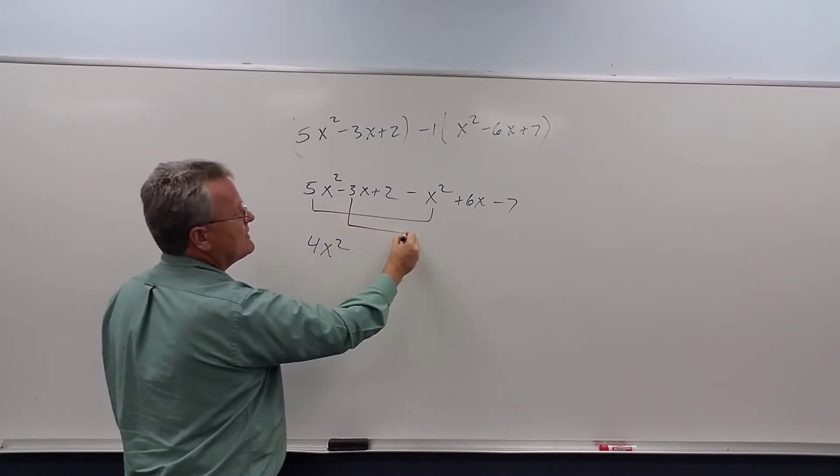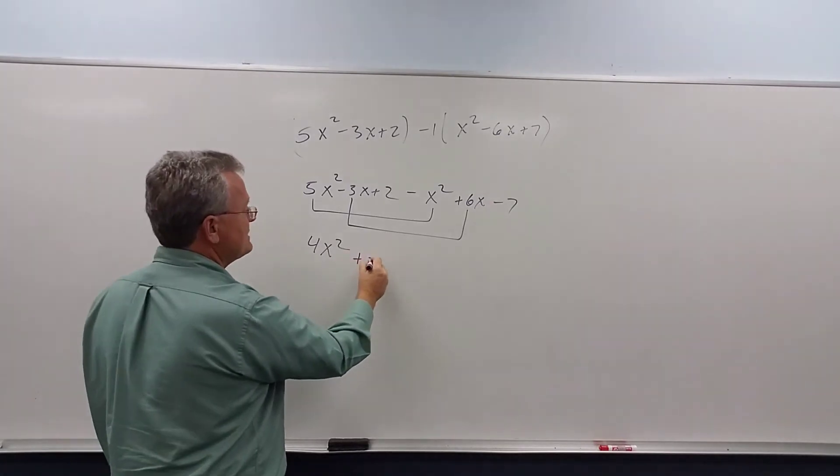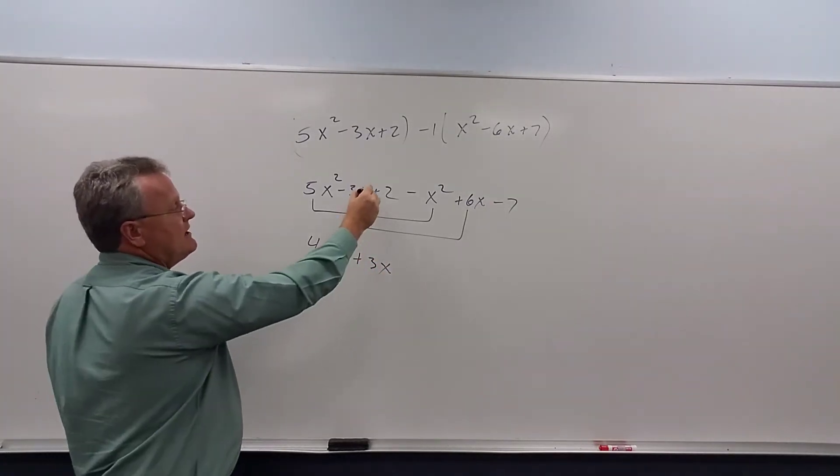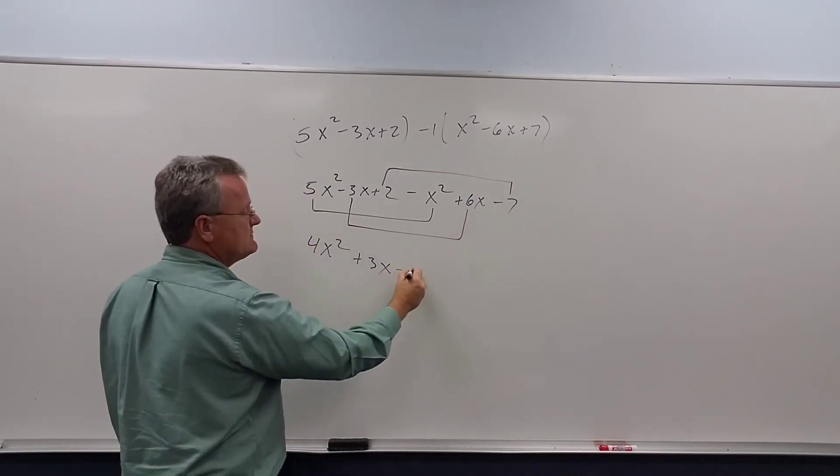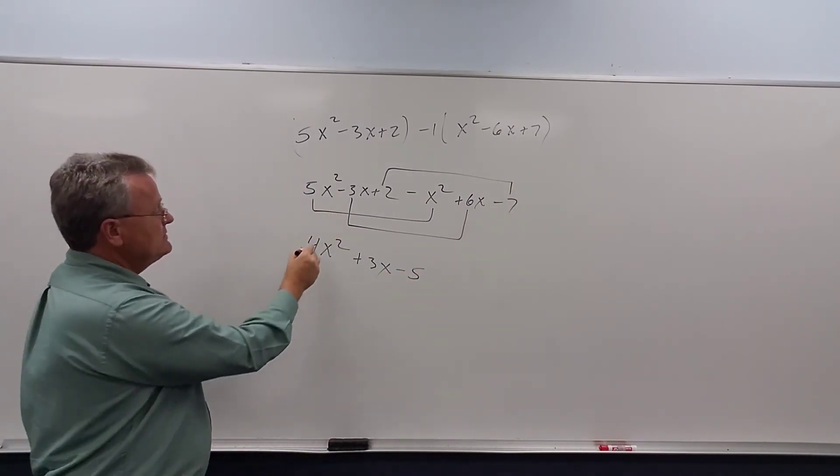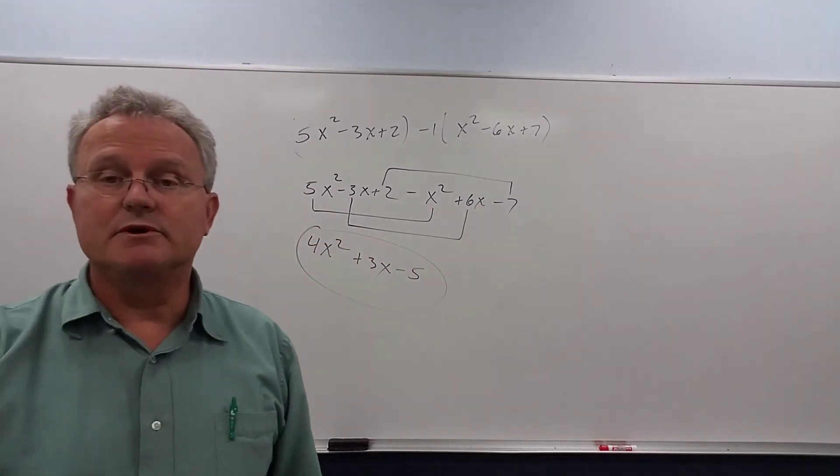Negative 3x and positive 6x is positive 3x. And then the numbers, positive 2 and negative 7, add up to negative 5. So this is the answer for these two polynomials.